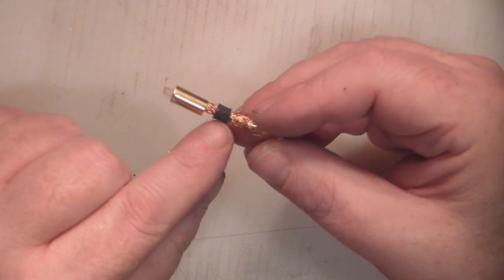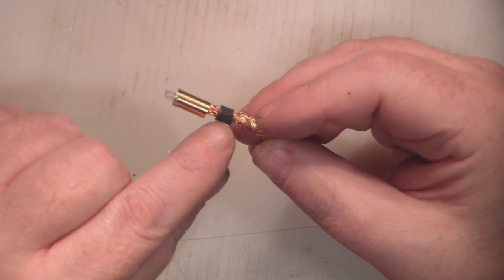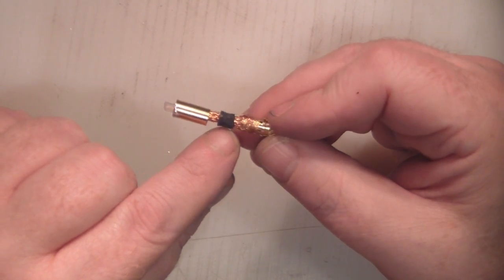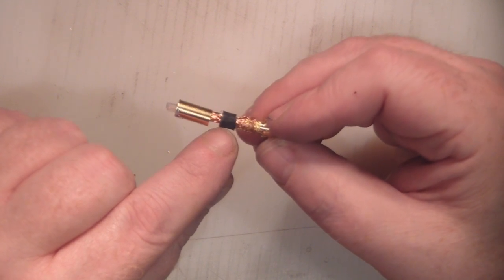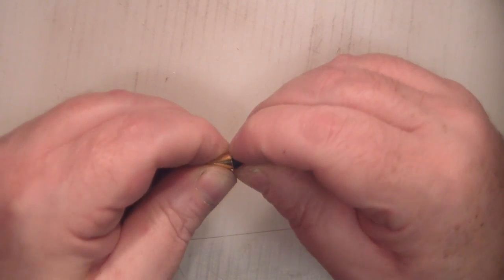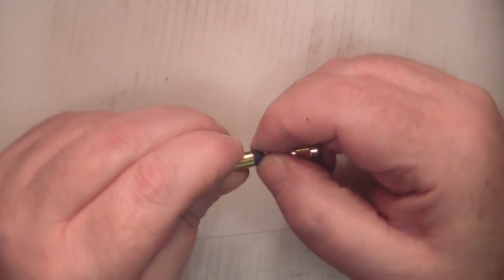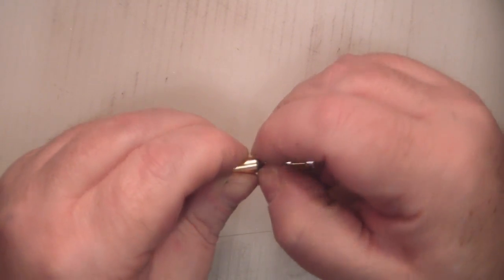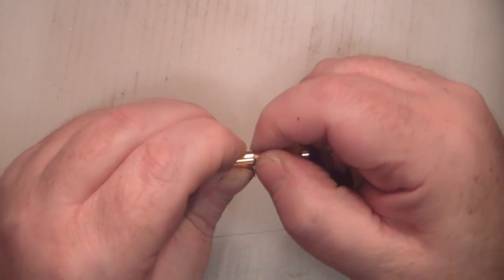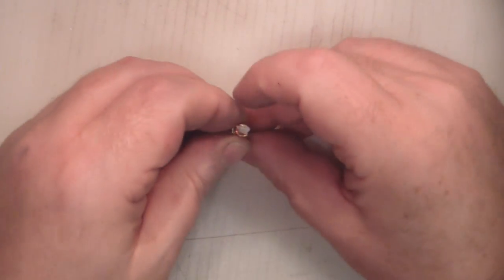So we're ready to fit this onto the SMA connector now and I've just thinned this out a little bit, the PVC shield that's left, just because it was just a little bit too thick for the connector. So we're going to push it on and work those way down to here.